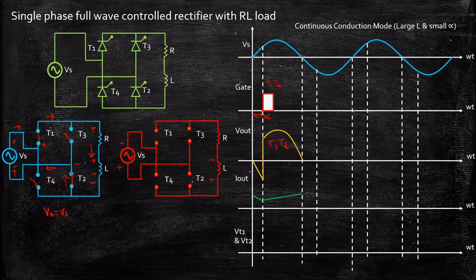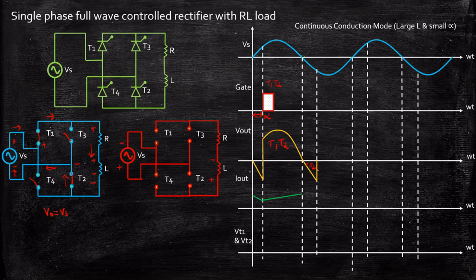As a result, T1 and T2 will still be acting as short circuits for some time, and Vout will be equal to Vs. The current direction remains the same as in the previous cycle. So the output voltage waveform still follows the supply voltage waveform — it goes into the negative direction — because T1 and T2 are still conducting. That is why we get this negative portion in the waveform.